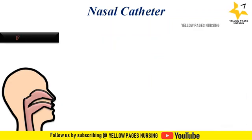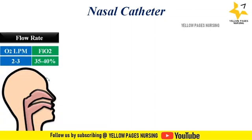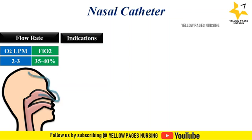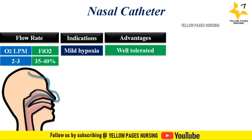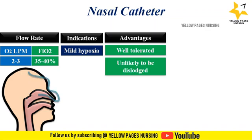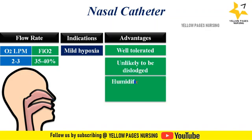With a nasal catheter, an oxygen flow rate of about 2 to 3 liters per minute can be given, with which FiO2 of about 35 to 40% can be achieved. Indications include mild hypoxia. Advantages: nasal catheters are usually well tolerated and unlikely to be dislodged. Humidification of oxygen is not necessary because the tip of the catheter lies in the nasal cavity.